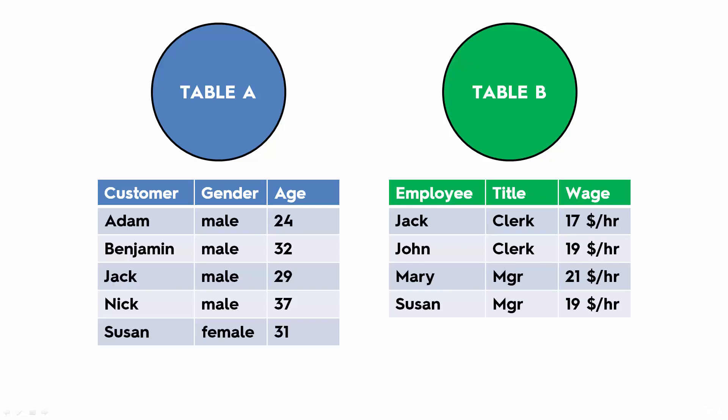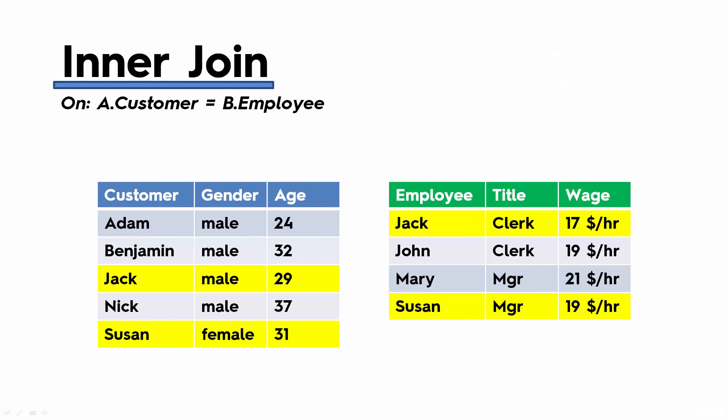What we're going to try to do is find out which of our customers are also our employees — basically, where do we have matching rows in these two tables? If we look at the tables, we can see right away that Jack and Susan both appear in the customer and in the employee tables. So how do we do this from a joining perspective? We'll start with an inner join.